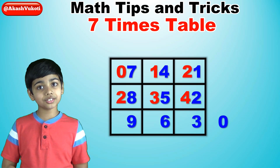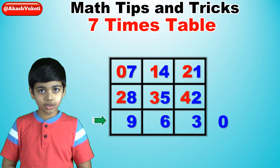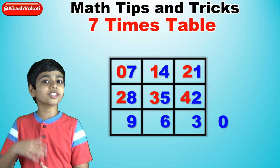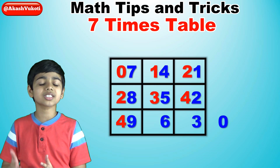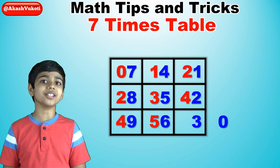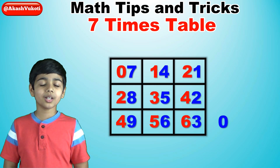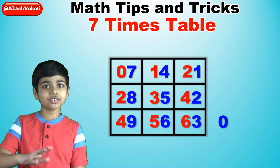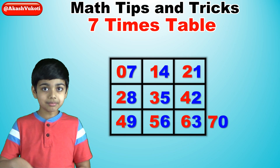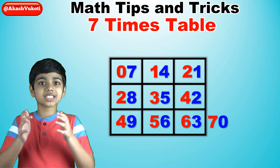And finally, for the tens digits in the bottom row, we will write four in the first box, five in the second box, and six in the third box. And then to continue the line over to the zero, we will write a seven next to the zero to get seventy.